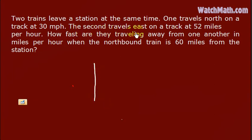The second travels east at 52 miles per hour. How fast are they traveling away from one another? This is the distance from the two trains when the northbound train is 60 miles from the station.